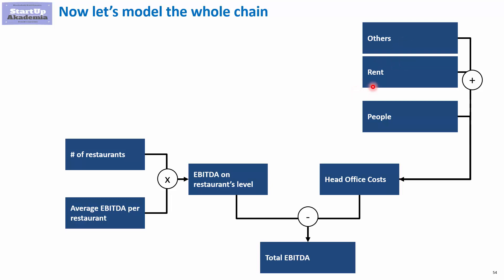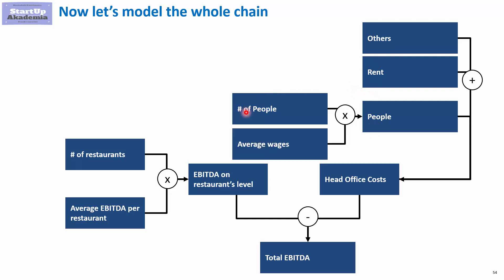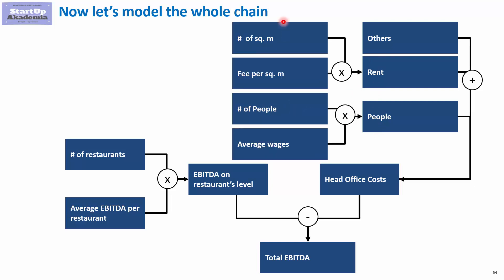Assuming we just have rent and people at head office, the drivers are as follows: for people, number of people and average wages; for rent, number of square meters and rent per square meter. We have now defined the drivers at the level of the whole chain, and next we'll look at what KPIs to attach to each and every driver.